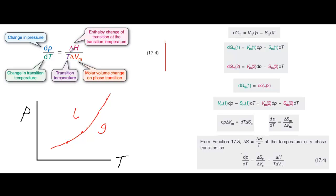Let's have a look at the Clausius-Clapeyron equation. T is the transition temperature — it could be the boiling temperature, the melting temperature, or the sublimation temperature, depending on the phase change involved. dP/dT gives the rate of change of pressure with change in temperature; it's the gradient of the curve in the PT graph. Delta H is the enthalpy change that accompanies the transition, and delta Vm is the change in molar volume between the two phases at the transition.